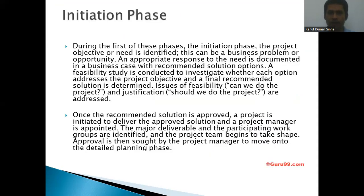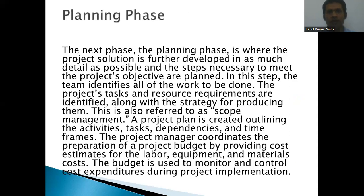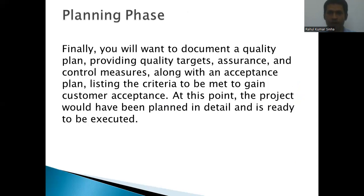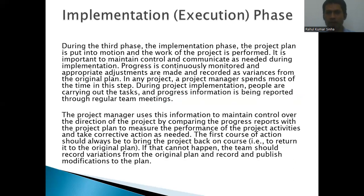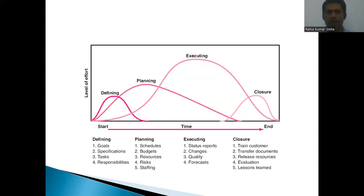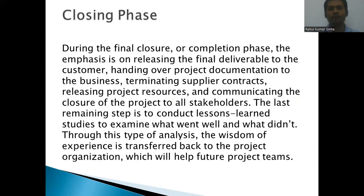The initiation phase is where you identify what you want to achieve and what you want to do. The planning phase is where you plan for whatever you want to do. The execution stage is where whatever you have planned, you work according to that and start according to your plan. Finally, the closure phase is where you have completed your task — either successfully or unsuccessfully.